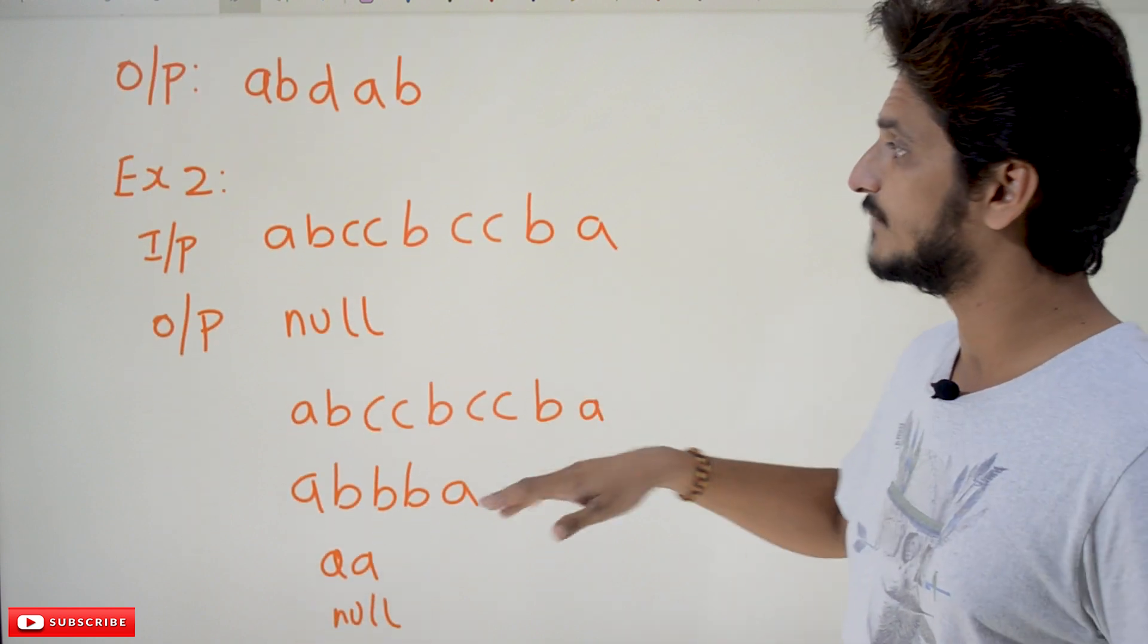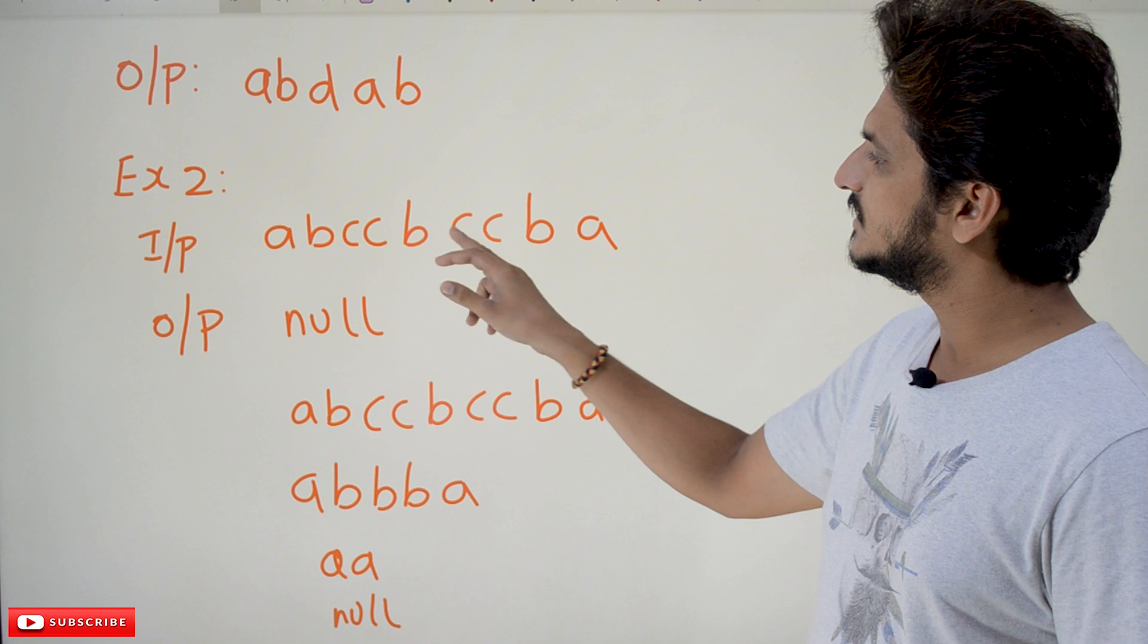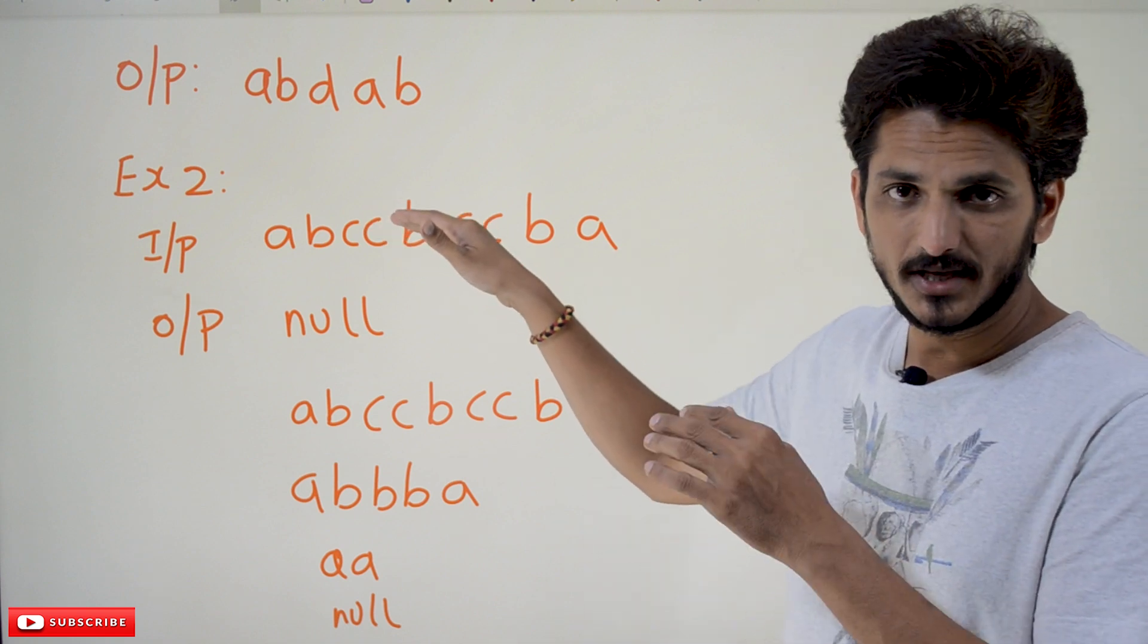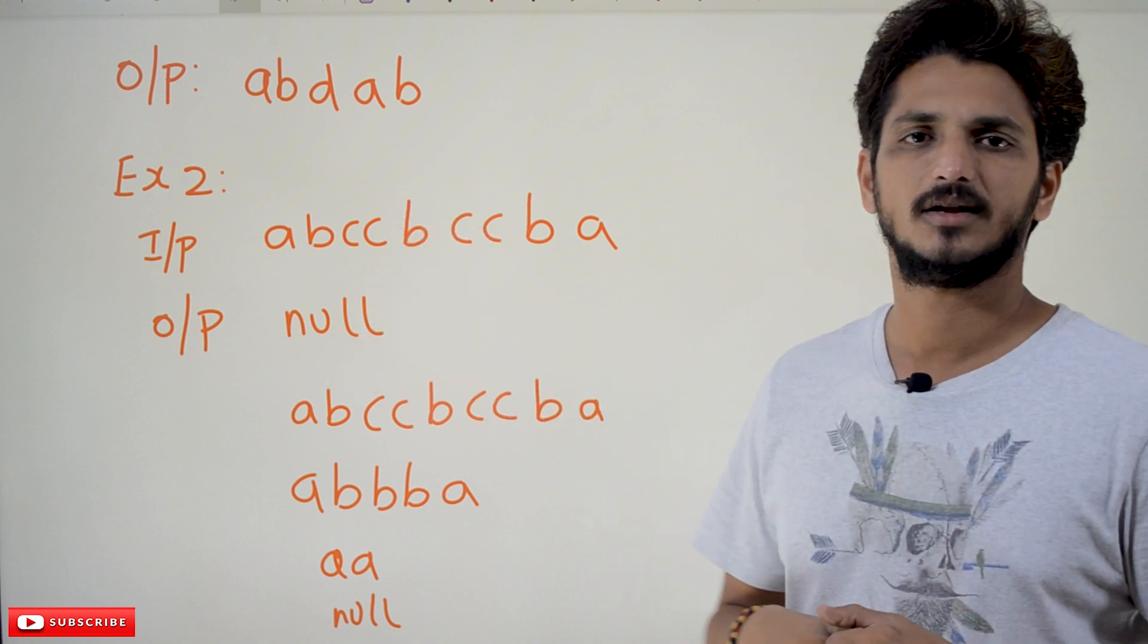Now coming to the second example, abccbccba. So the output which you are going to display here is null string, null value.